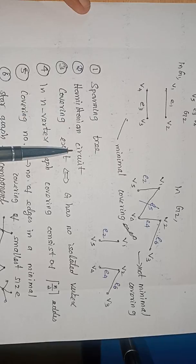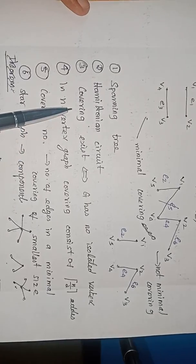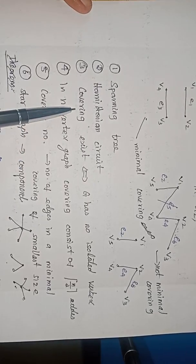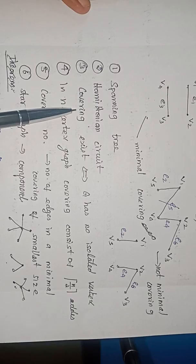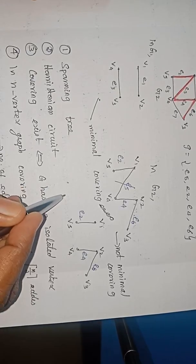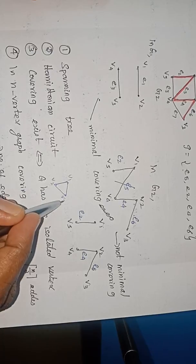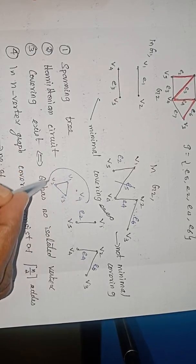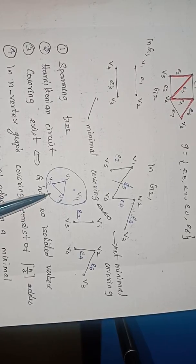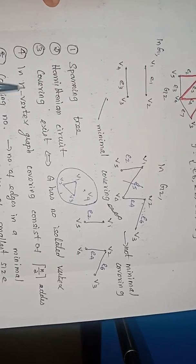When you find a Hamiltonian circuit, that also gives you a minimal covering. And a graph will have a covering only if G has no isolated vertex. Suppose there is a graph with V1, V2, V3 and an isolated vertex V4 — you cannot find a cover for such a graph because you cannot cover V4. So covering exists for a graph G only when G has no isolated vertex.